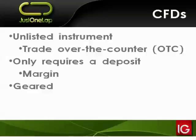CFDs are geared products. In a nutshell, if the share you've got a CFD on moves say 4%, your profit on your margin would be 40%. You're amplifying the move — you make profit faster and of course you make losses faster. It works both directions: you profit quicker and you lose money quicker if the trade goes against you.